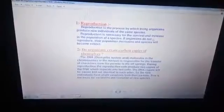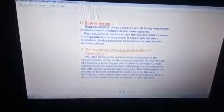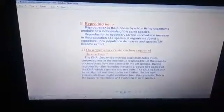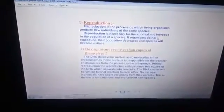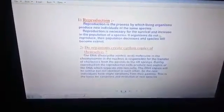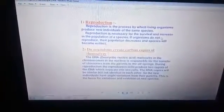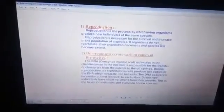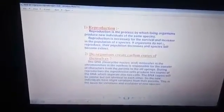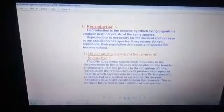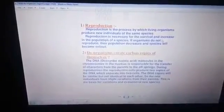DNA is a molecule present in the nucleus which is responsible for the transfer of characters from the parent to the next generation or offspring. During reproduction, the reproductive cells or gametes produce two copies of DNA, one from each parent, which separate into two cells, two gametes. Then these DNA copies will be similar but not identical because they come from two different parents, male and female.